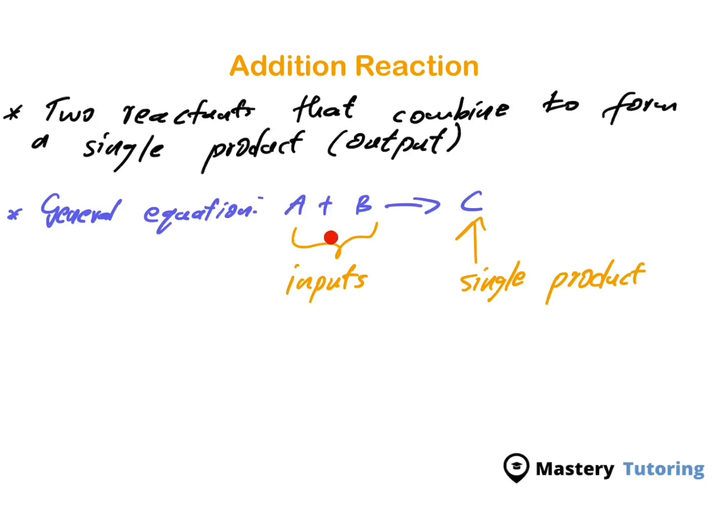The reactants can be two or more - it can be three reactants, four reactants, ten reactants. But what you need to keep note of is that the output is a single output. So it can be three reactants, ten, whatever number of reactants, but remember that your output is always going to be one output.